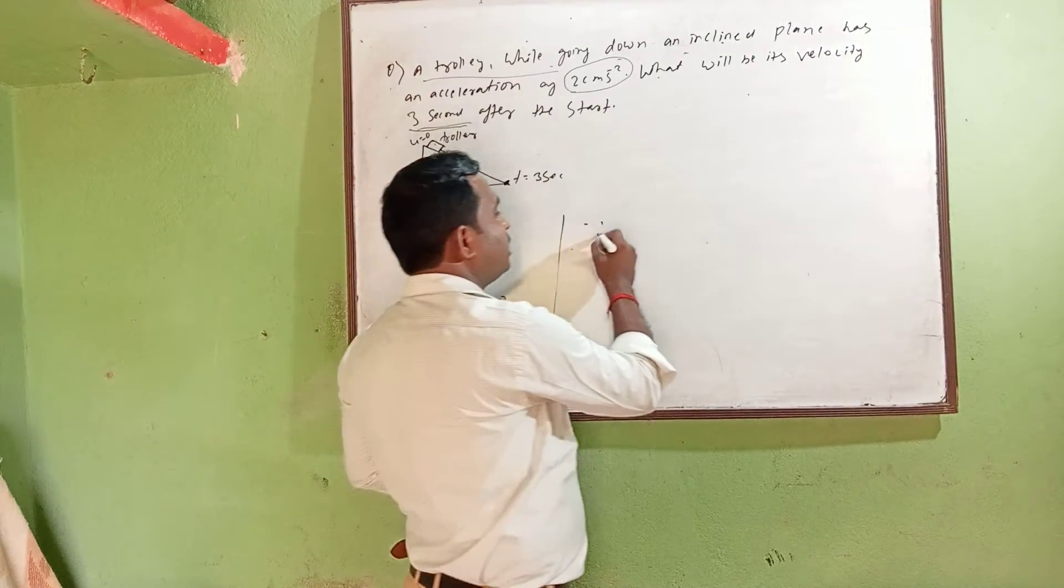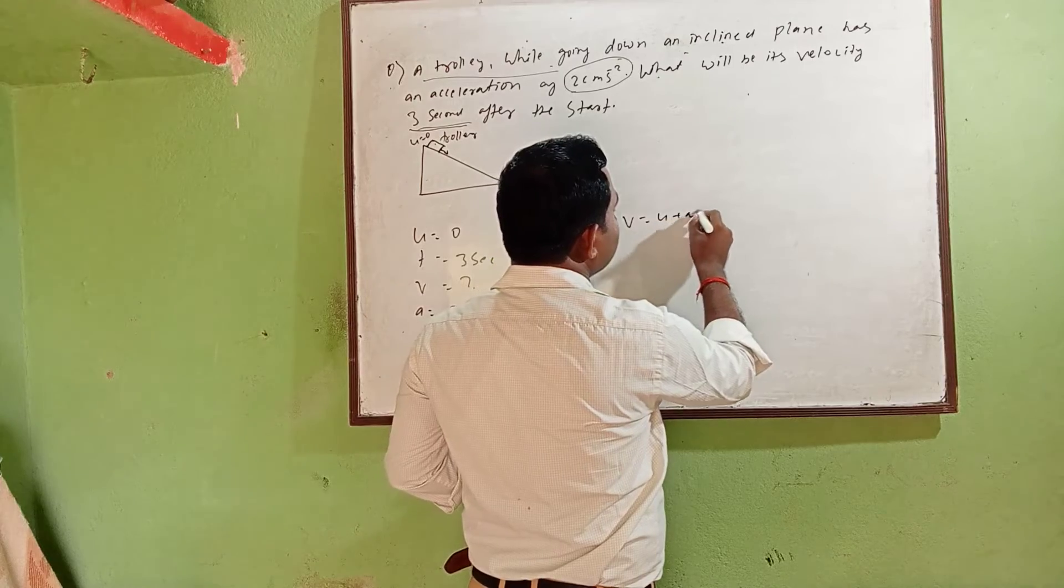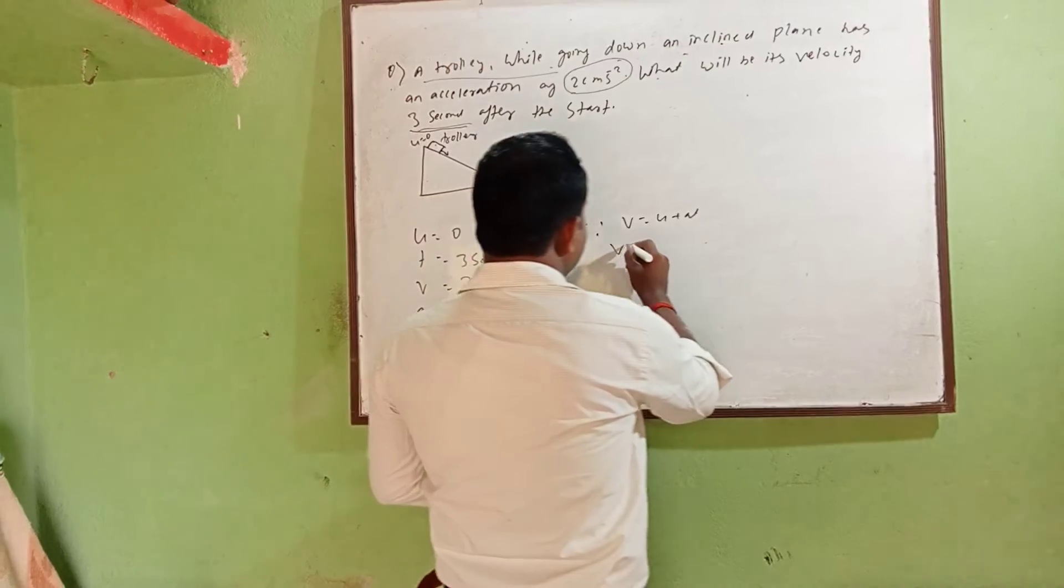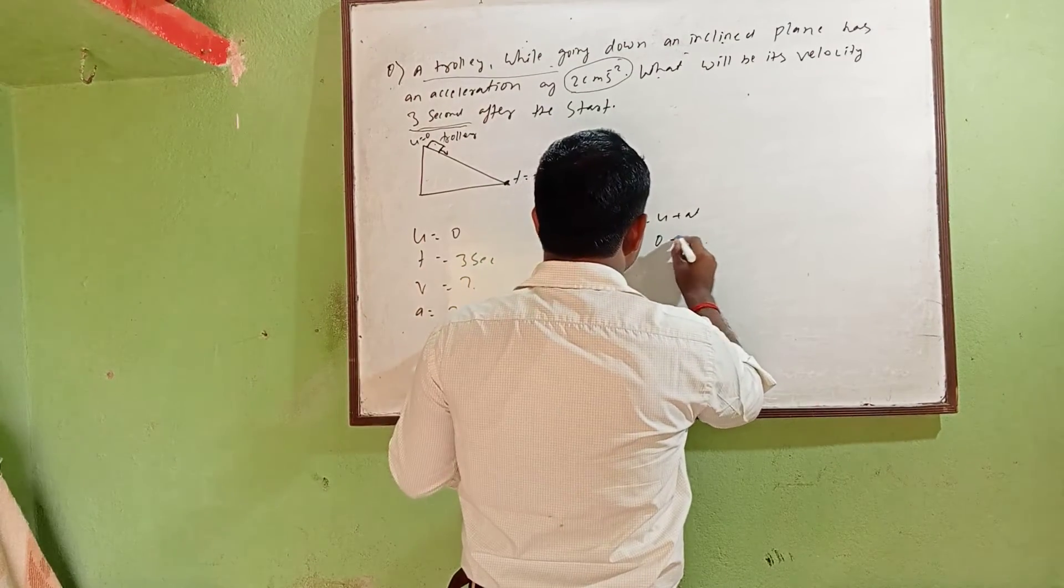We have the formula: v is equal to u plus at. You know the formula? Very good. Now you can substitute this one, so v equal to the value of u, zero, plus a that is two into t that is three.